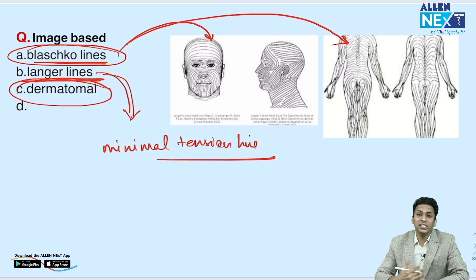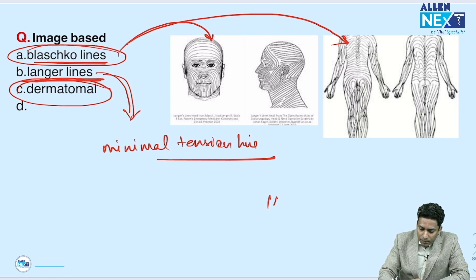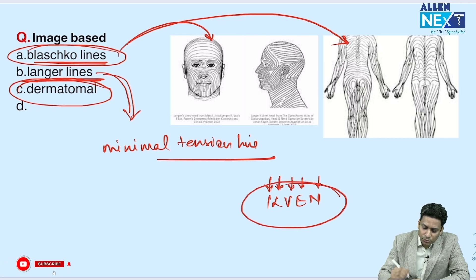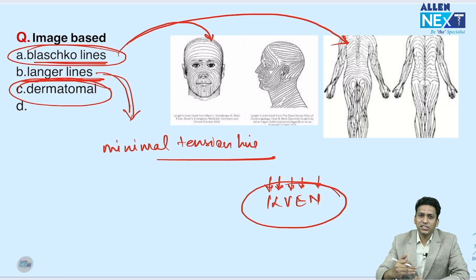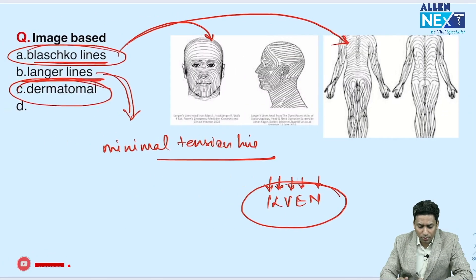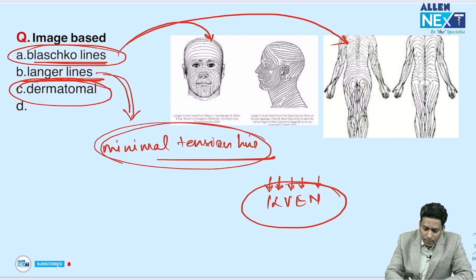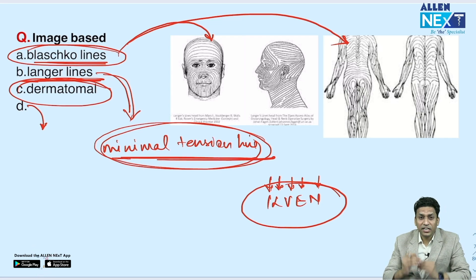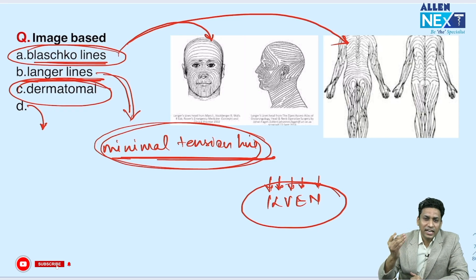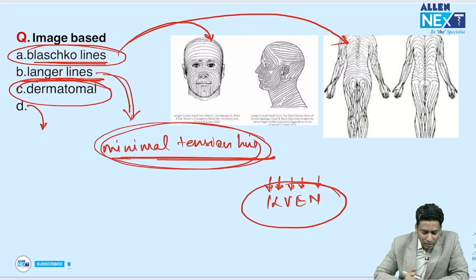Various conditions follow Blaschko lines, such as inflammatory linear verrucous epidermal nevus (ILVEN) and incontinentia pigmenti. Langer lines are also called skin tension lines or minimal tension lines — these are the Langer lines important for surgical incisions.